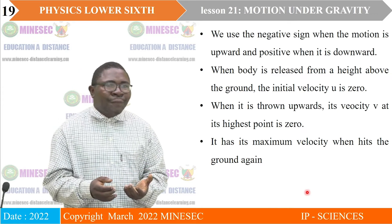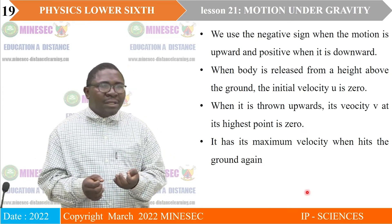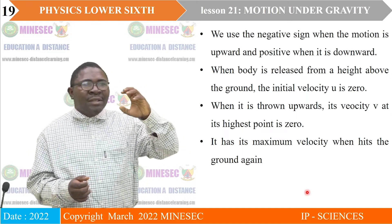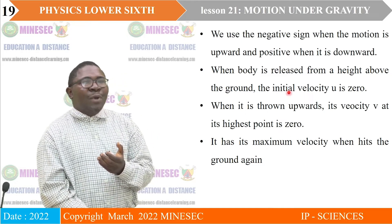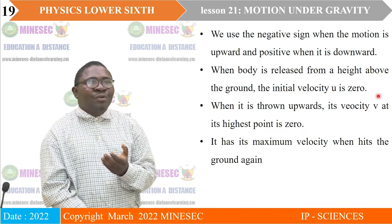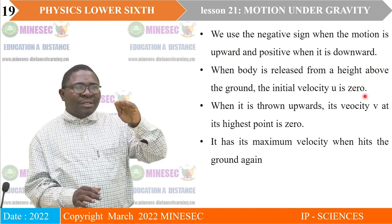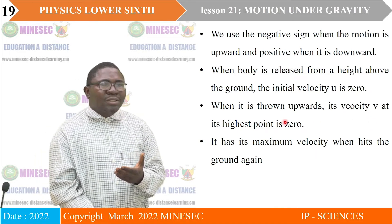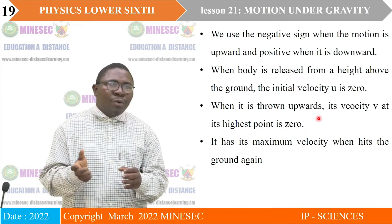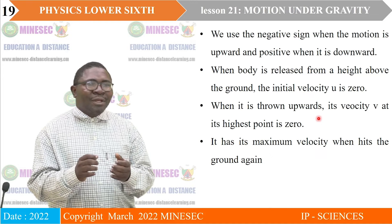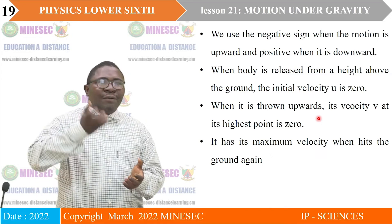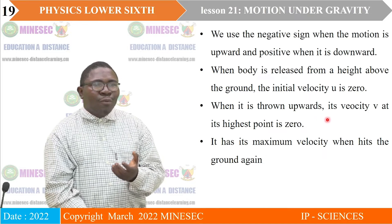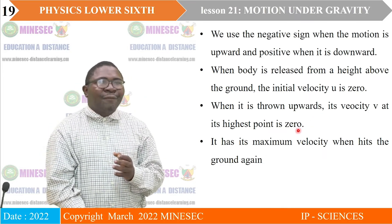When a body is released from a height above the ground — for example, standing on top of a building and releasing an object — at that maximum height, the initial velocity U is equal to zero. So each time you release an object from a height above the earth, the initial velocity U equals zero. When an object is thrown vertically upward, by the time it reaches its maximum point, the final velocity V is equal to zero.